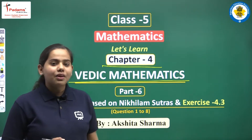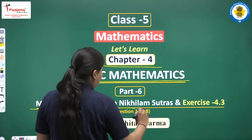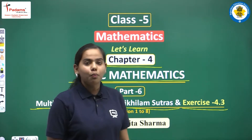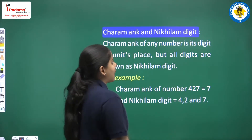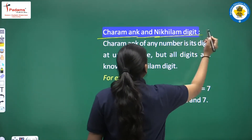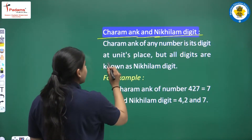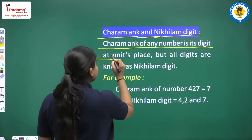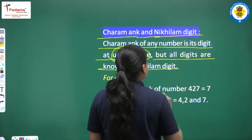Let us start with today's class. Here you are going to learn multiplication based on Nikhilam Sutra. Then we are going to solve exercise 4.3. We will first understand the concept of Charam Ankh and then we will understand Nikhilam Digit. Charam Ankh of any number is its digit at units place, but all digits are known as Nikhilam Digit.